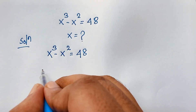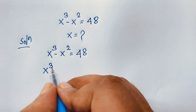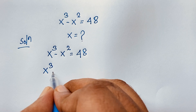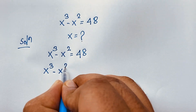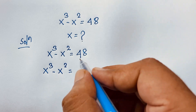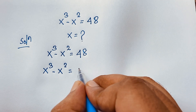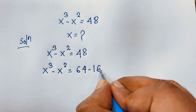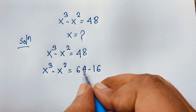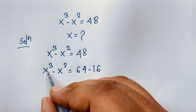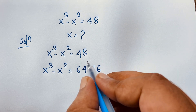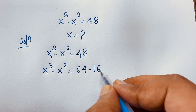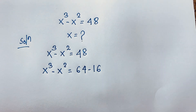You can solve this question by various methods, but I solve this question by an easy method. Here is x squared and this 48. You can say this 48 will be 64 minus 16 — 64 minus 16 equals 48. I take 64 because x to the power 3: 4 to the power 3 equals 64. For x squared I take 16, which is 4 to the power 2.